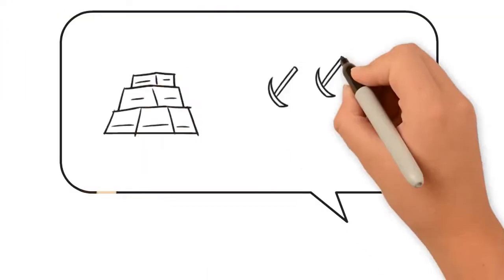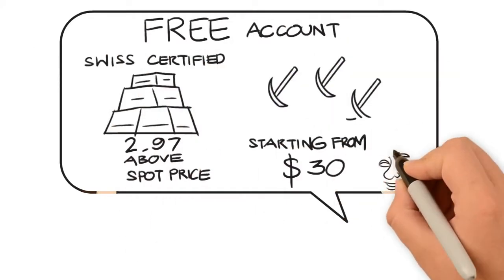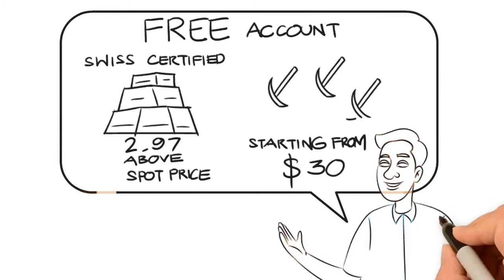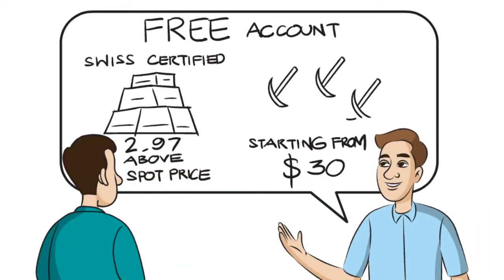So Oscar gave them different options to start from. He said you can set up a free account and buy your Swiss certified gold and silver for just $2.97 above spot price, and additional mining power starting from $30.